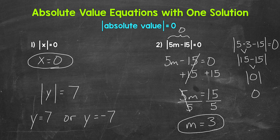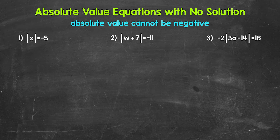So there is our one solution section. Let's move on to absolute value equations with no solution. Keep in mind, the absolute value of something — whether it's a number or an expression — cannot be negative. It cannot equal a negative. The absolute value of something is always going to be positive or zero.